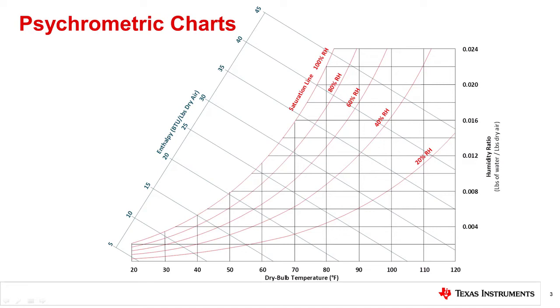A psychrometric chart shows the relationship between the parameters we just defined. The x-axis typically displays the dry bulb temperature and the y-axis displays humidity mixing ratio. Additional values such as dew point, vapor pressure, enthalpy, absolute humidity, and relative humidity may or may not be displayed depending on the specific chart. For any psychrometric chart, knowing any two parameters will allow you to locate a position on the curve that corresponds with all other labeled values.